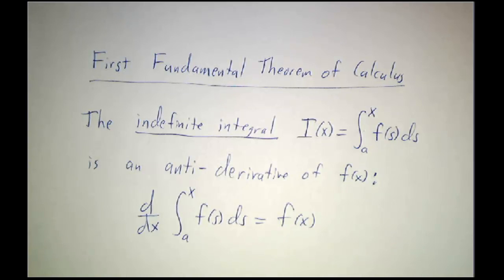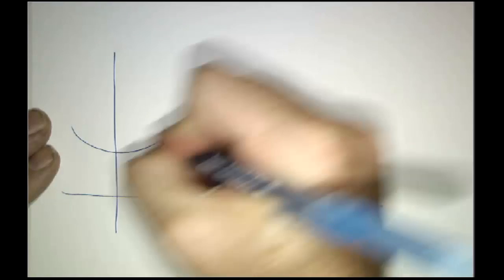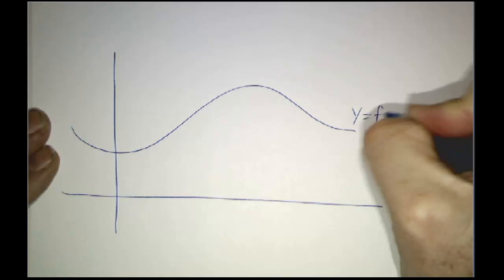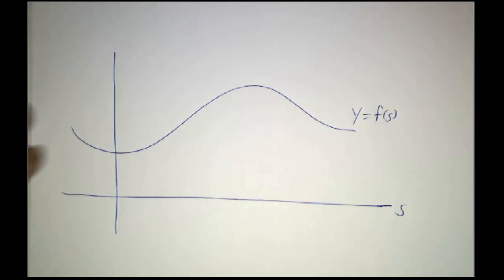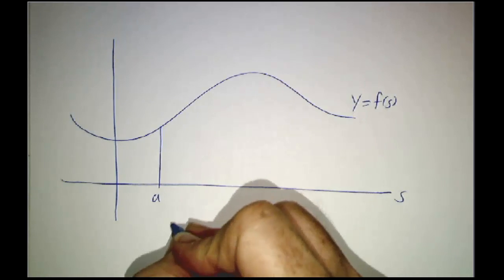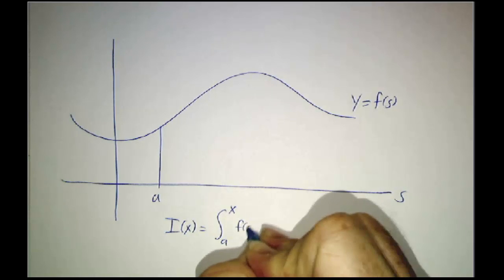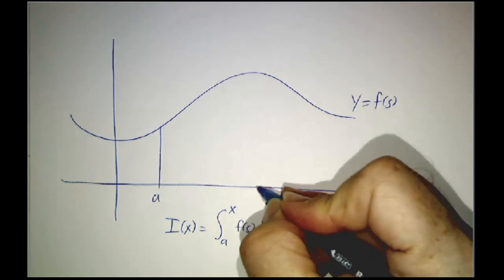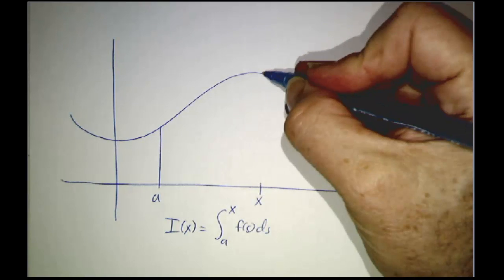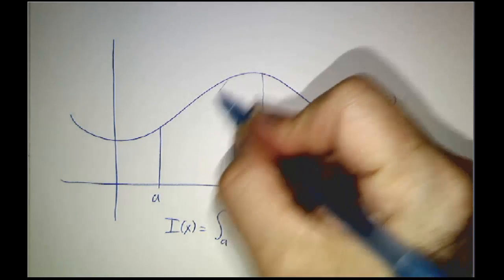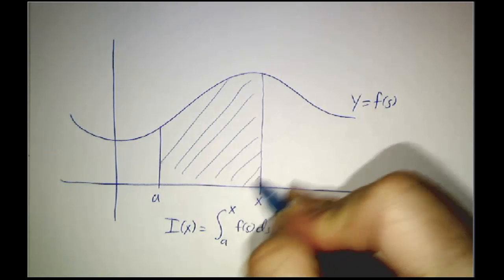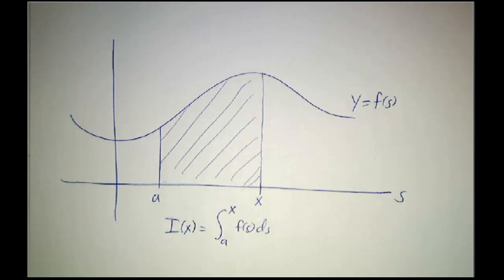Okay, so let's look at a picture of what's going on. Let's suppose we've got our function f. Here's our function y equals f of s. Here's our variable s. We start at a certain point a, and then we say, we'll define the function I of x is the integral from a to x of f of s ds. In other words, if you pick a value x, then I of x is all the area under the curve between a and x. Okay, great. It's a function.